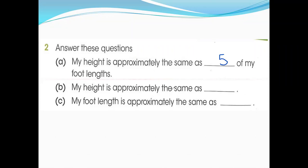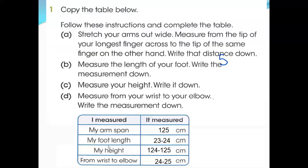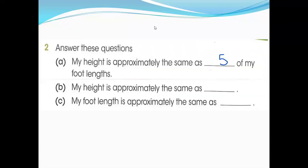My height is approximately the same as... We are talking about height. So if you check your height, 124-125, and you see my arm span, if you open your arms, you stretch your arms span, this is 125. So you can say your arm span and your height are approximately the same. So we write here: arm span.